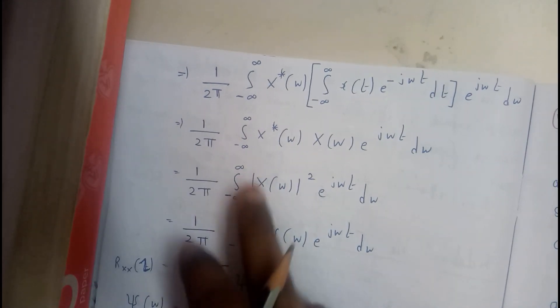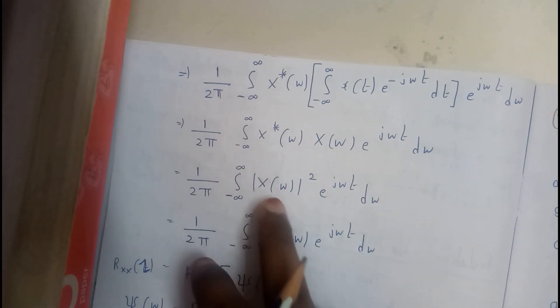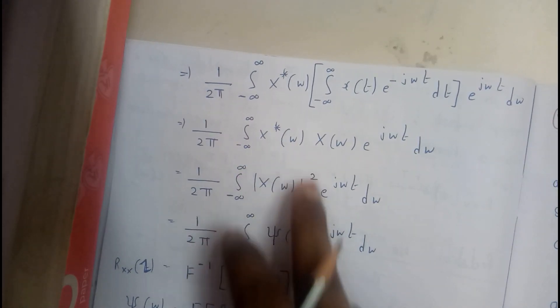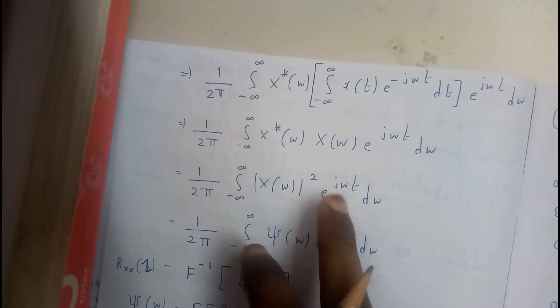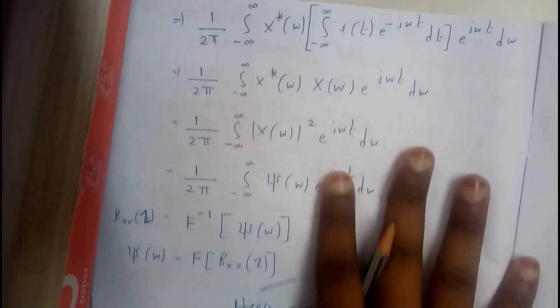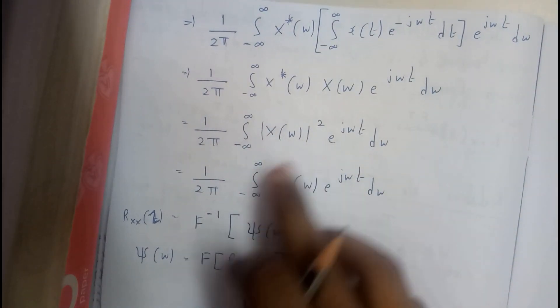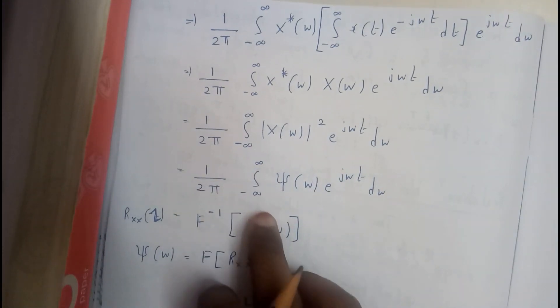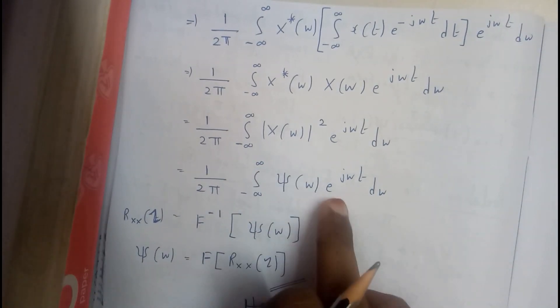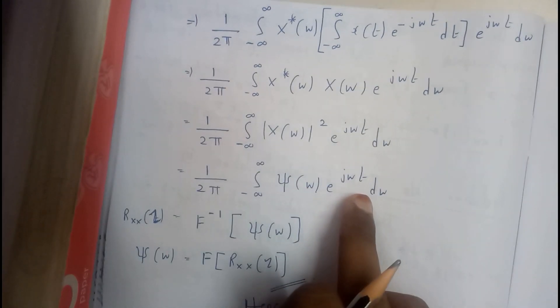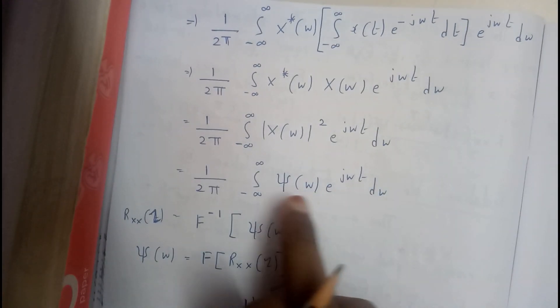So we get 1 by 2pi integral from minus infinity to infinity of magnitude of X of omega squared into e to the power of j omega Z, d omega. This is nothing but Psi. So 1 by 2pi integral from minus infinity to infinity of Psi of omega into e to the power of j omega Z.